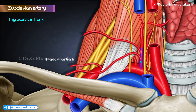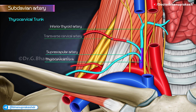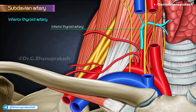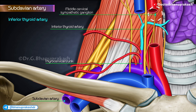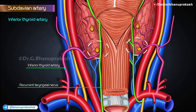Thyrocervical trunk. The thyrocervical trunk is a short, wide vessel which arises from the front of the first part of the subclavian artery, close to the medial border of the scalenus anterior and between the phrenic and vagus nerves. It almost immediately divides into the inferior thyroid, suprascapular and transverse cervical arteries. The inferior thyroid artery runs first upwards, then medially, and finally downwards to reach the base of the gland. During its course, it passes behind the carotid sheath and the middle cervical sympathetic ganglion, and in front of the vertebral vessels. Its terminal part is intimately related to the recurrent laryngeal nerve, while the proximal part is away from the nerve.